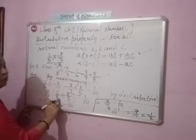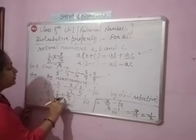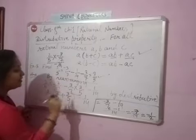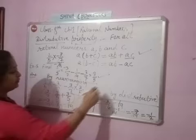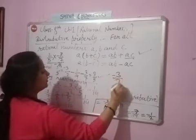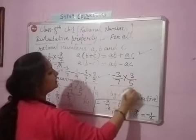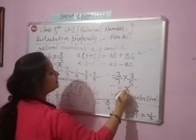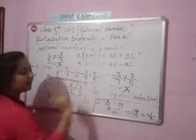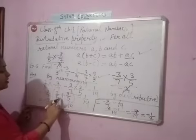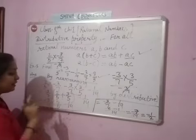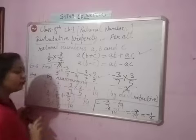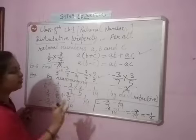Then this term will be minus 3/7 divided by minus 3/7 multiply 3/5. This will be cancelled. Minus minus will be cancelled, what will be plus 3/5.